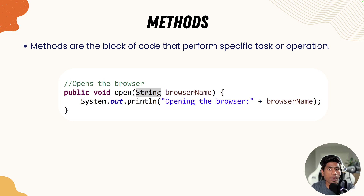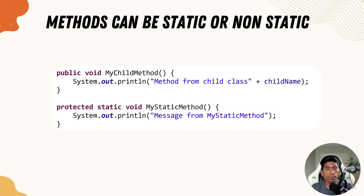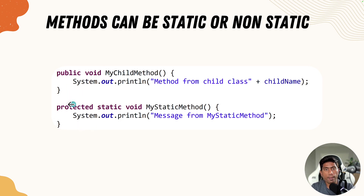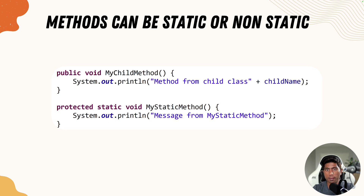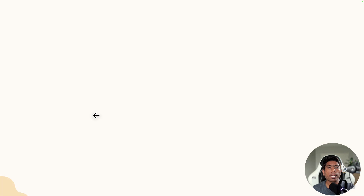A method can also have a static or non-static keyword. A method like 'myChildMethod' is an instance method — without static, you access it using an instance object of a class. Whereas you can access a static method without an instance object by using the class name, then a dot, then the method name.